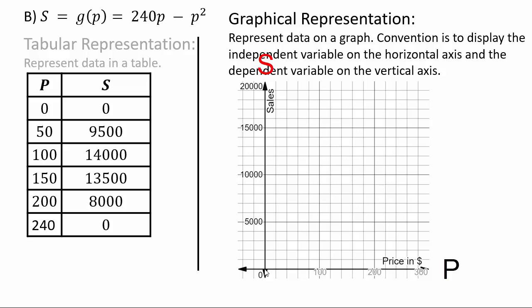So our sales would be on the vertical and price in dollars will be on the horizontal axis. So this point, 0, 0. Where the two axis intersect, that's 0, 0. So let's plot our coordinates. So we have 0, 0, 50 and 9,500, 100 and 14,000, 150 and 13,500, 200 is 8,000 and 240 is 0.